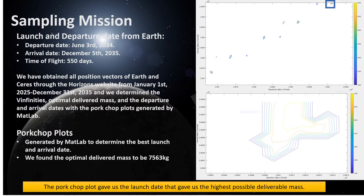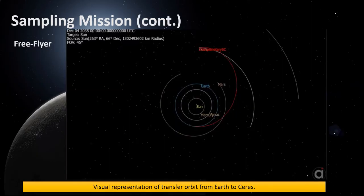The pork chop plot generated through MATLAB utilizing our Lambert solver was able to generate an ideal departure and arrival date, allowing for a maximum deliverable mass of 7,563 kilograms. Here you can see a brief view of our mission trajectory starting from Earth and arriving at the Ceres sphere of influence, generated by FreeFlyer.